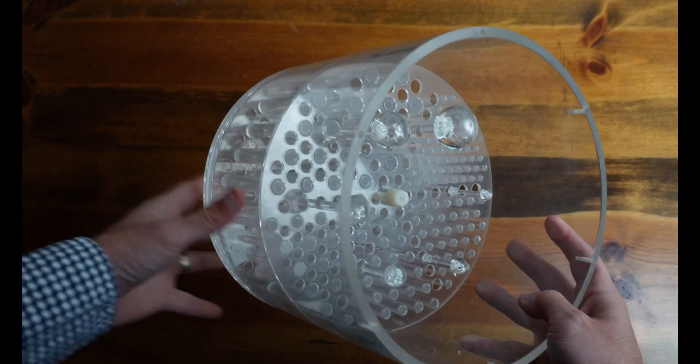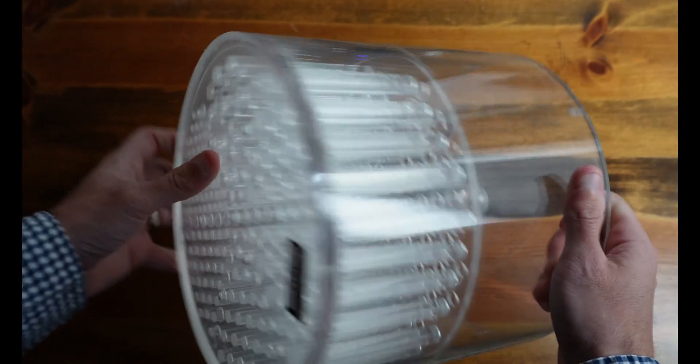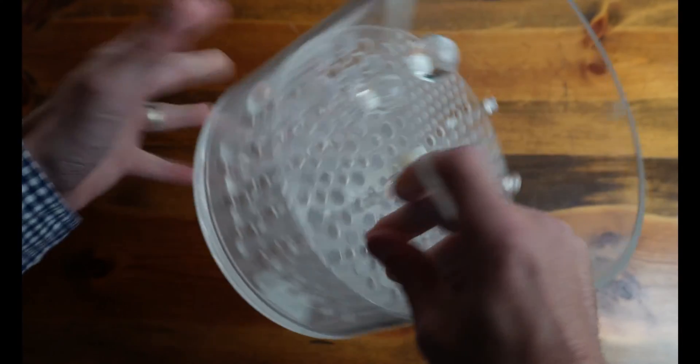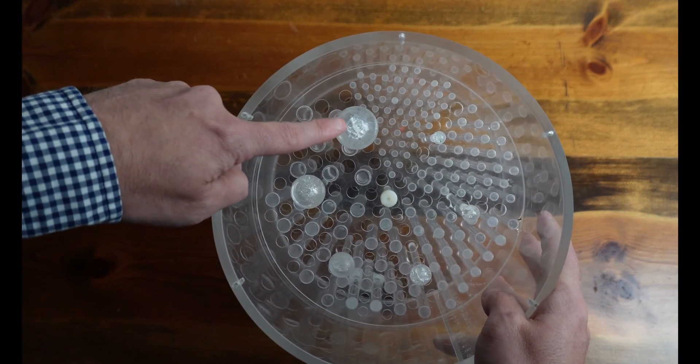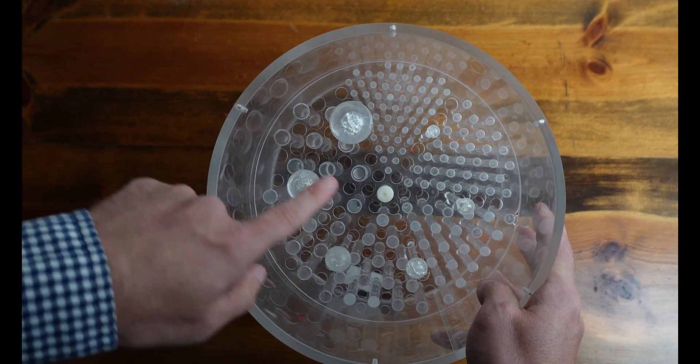So now we have all of our spheres are placed in the Phantom. They're screwed in through the threads at the bottom of the Phantom. And we have each sphere is aligned with the corresponding rod section going from largest to smallest.